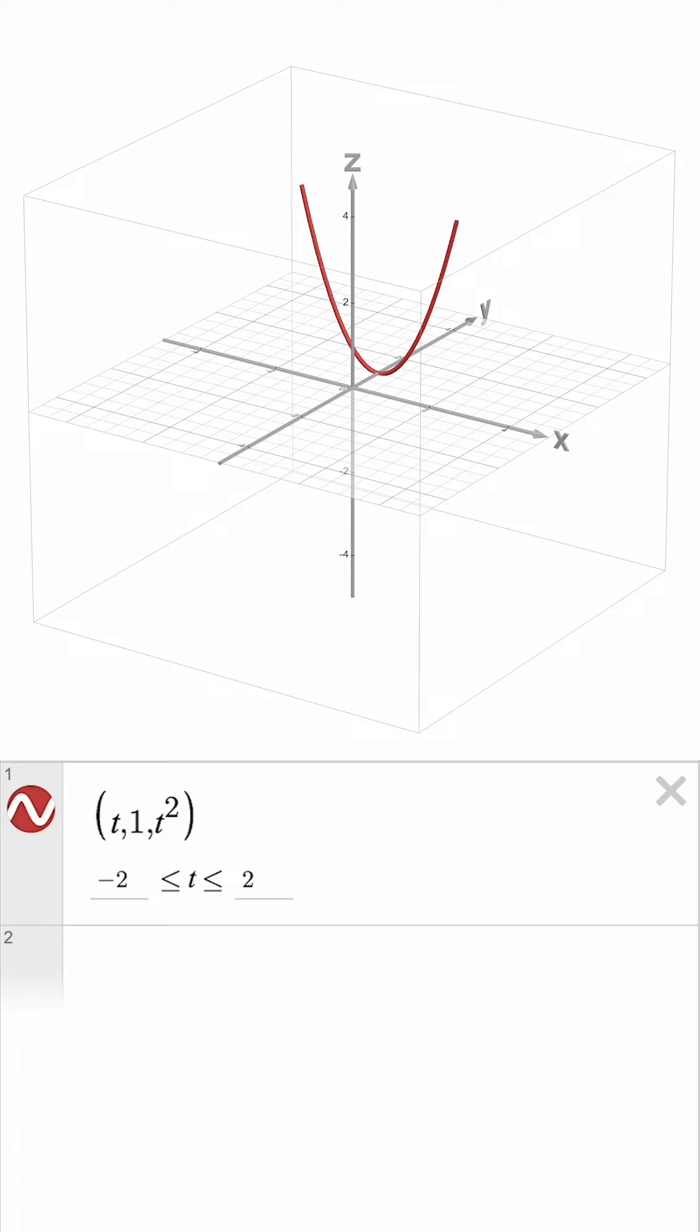What sets Desmos 3D apart from the 2D calculator is the ability to create parametric surfaces, which require two parameters, specifically u and v.